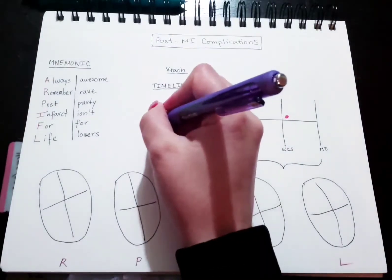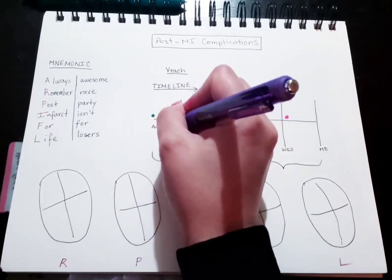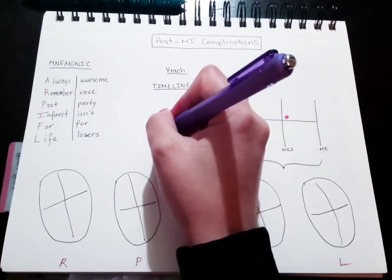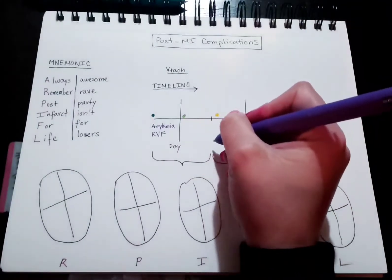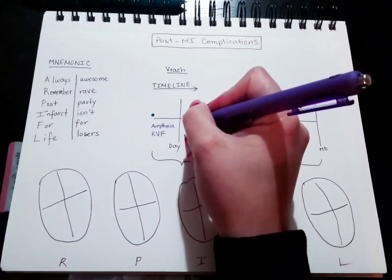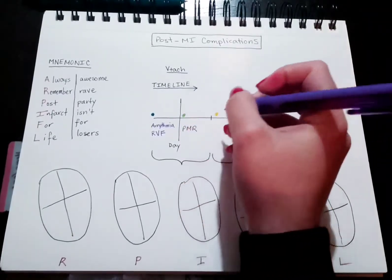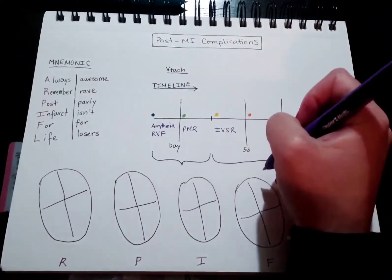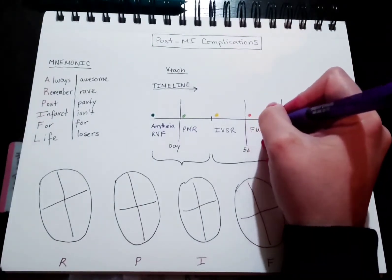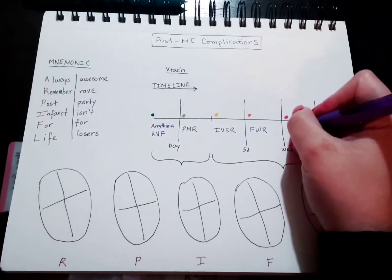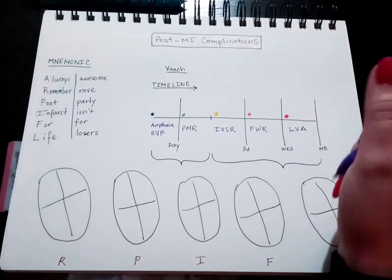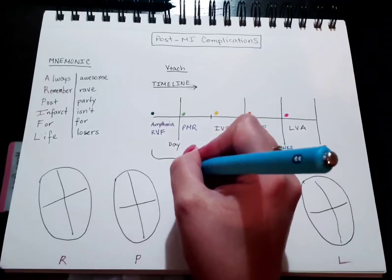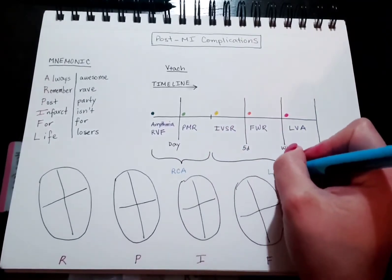Starting with A for arrhythmia and R for right ventricular failure. After the day, usually between three to five days, we're going to have papillary muscle rupture and over here, interventricular septal rupture. After that, we'll have free wall rupture followed by left ventricular aneurysm. Next thing I want you to label is that these involve the right coronary artery, whereas the rest involve the LAD.